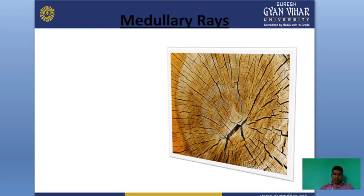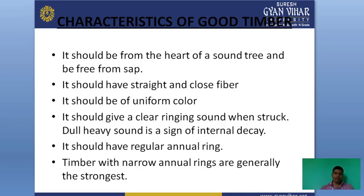This is the main example of medullary rays — see the picture to understand medullary rays present in any tree. The most important topic is characteristics of good timber. Good timber should be free from the heart of a sawn tree and free from sap. It should have straight and close fiber, uniform color, and give a clear ringing sound when struck. A dull heavy sound is a sign of internal decay. It should have regular annual rings — timber with narrow annual rings is generally the strongest.